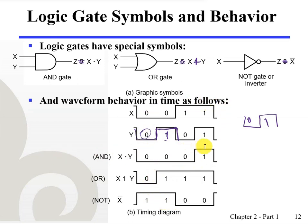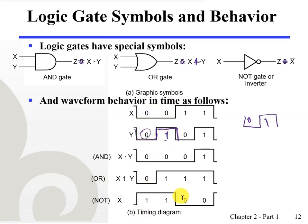The AND gate responds with logic one at the output when both inputs are logic one. The OR gate responds with logic one at the output if either input signal is logic one. The NOT gate, more commonly called an inverter, simply inverts whatever the input is: if zero then one, if one then zero. The NOT name is apparent from the timing diagram — the output logic signal is the inversion of input logic X.